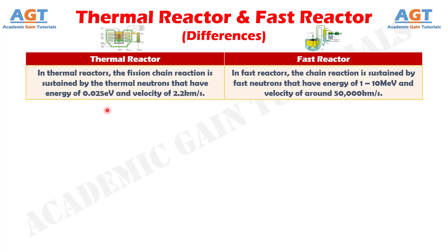Difference number 1. In thermal reactors, the fission chain reaction is sustained by thermal neutrons that have energy of 0.025 electron volt and velocity of 2.2 kilometers per second.